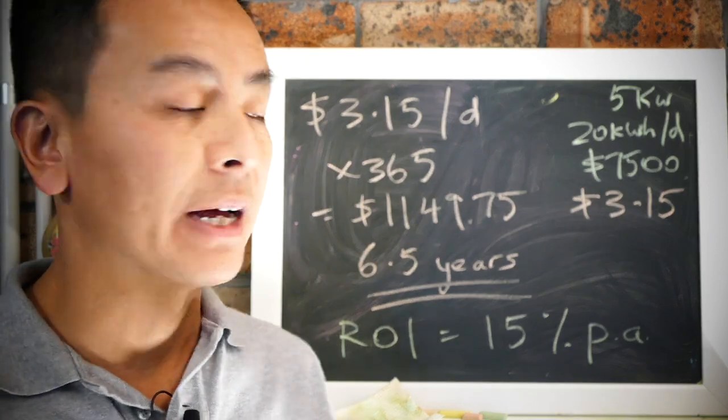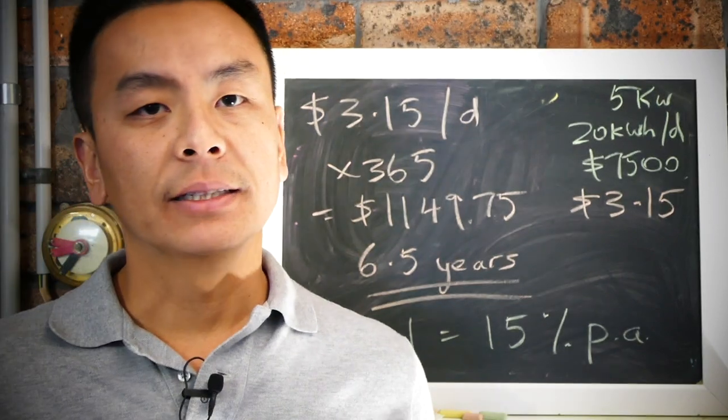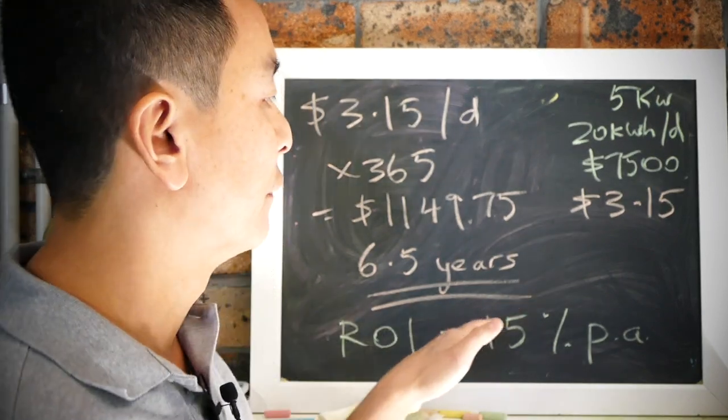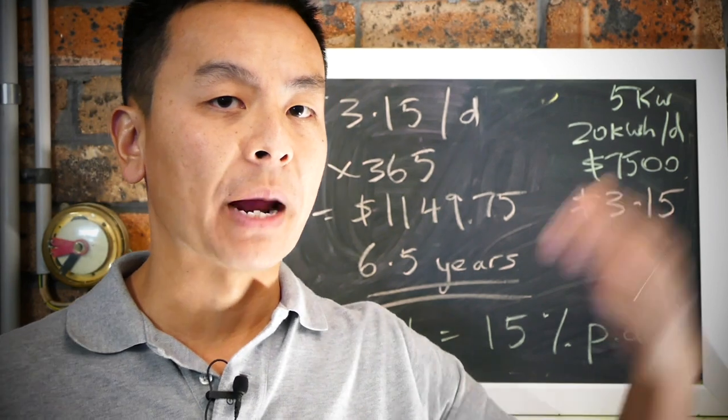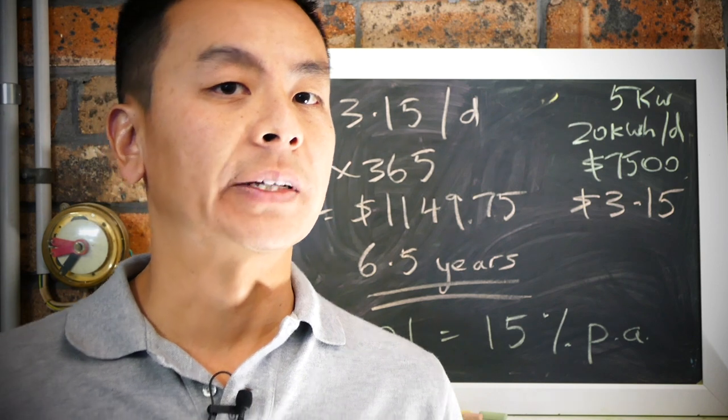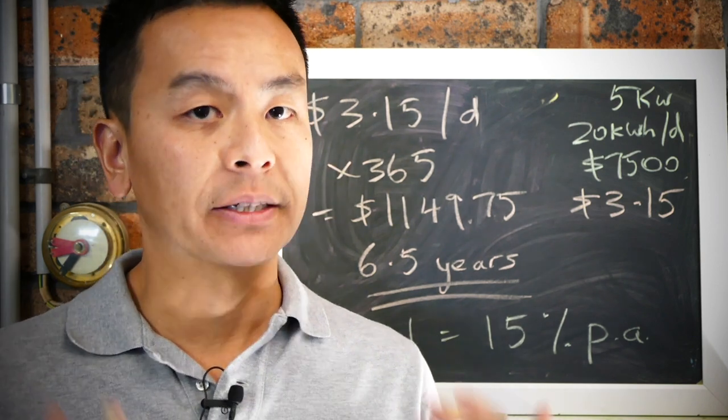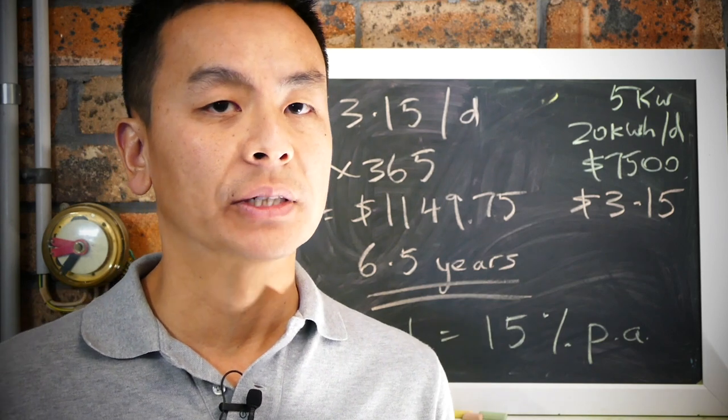So fifteen percent per annum return on solar panels, five kilowatt system, seven thousand five hundred dollars initial outlay after six and a half years, that's your return. Now the only caveat is that the energy that you fed back into the grid is not yours, you still got to buy it back at thirty cents per kilowatt hour. If you had a battery like a Tesla Powerwall 2 or some of the other products on the market, you could store your own energy, be sustainable and use it at night time when the sun goes down.